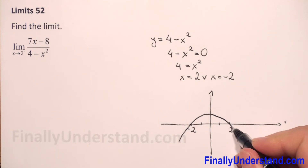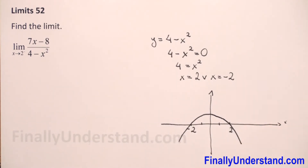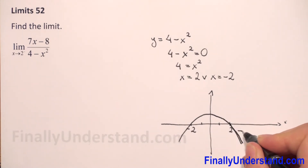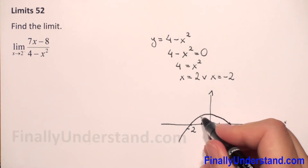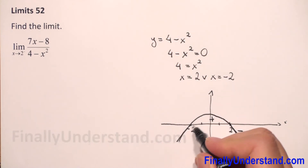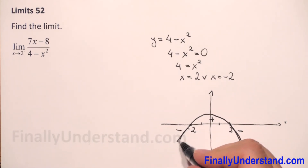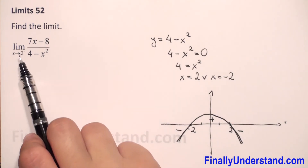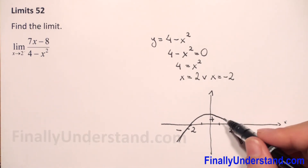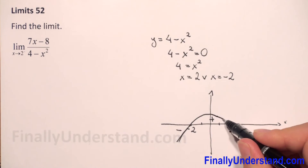From the graph we see that the part of the curve outside the roots (beyond ±2) is below the x-axis, meaning negative values. The part between negative 2 and 2 is above the x-axis, so it has positive values. We are approaching 2 from the left, meaning we approach 2 through positive values.